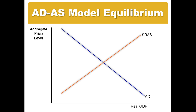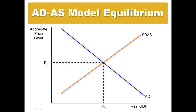We also have what's called the short-run aggregate supply curve. Where those two curves intersect is what we call our point of equilibrium. At that point of equilibrium, there is a certain price level, P sub E, and an output level, Y sub E — where Y indicates output. That's the point at which the quantity of goods supplied in the economy equals the quantity of goods demanded in the economy.